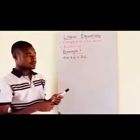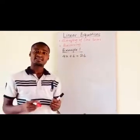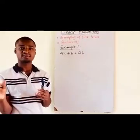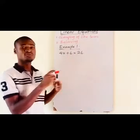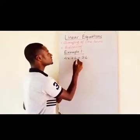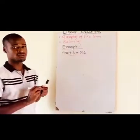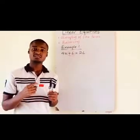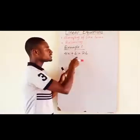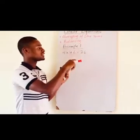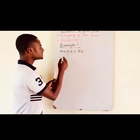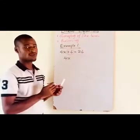You can see that the variable term 4x is already at the left hand side. The number term 26 is already at the right hand side. The term positive 6 is a number term and so it must move to the right hand side. We all know that if any term moves across the equal sign, it must change to the opposite term. So positive 6 will change to negative 6.